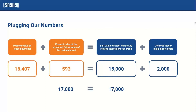To fully validate, we plug all numbers into our formula. On the left side: PV of lease payments is $16,407 and PV of the expected residual value is $593 using the 11.01%, totaling $17,000. On the right side: fair value of $15,000 minus no investment tax credit, plus initial direct costs of $2,000, also totaling $17,000. Both sides equal $17,000, fully validating our implicit rate of 11.01%, found using Excel's IRR function.